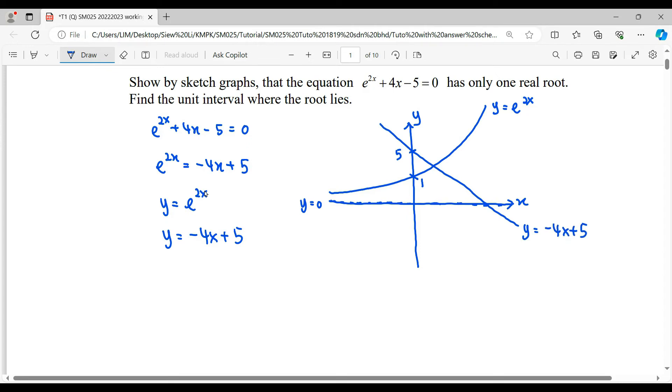What is the x-intercept here? Let y = 0. So -4x + 5 = 0, which means x = 5/4.